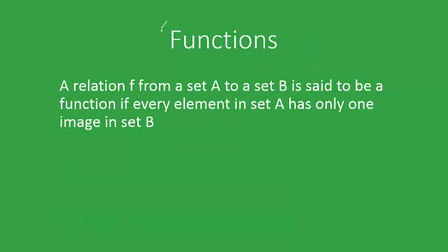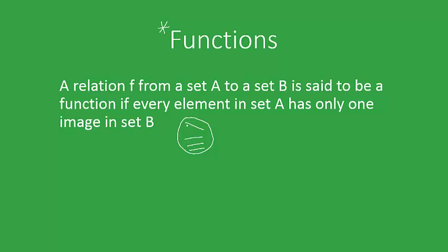Next is the most important concept of this video tutorial: functions. A relation F from a set A to set B is said to be a function if every element of set A has only one image in set B. As shown here, the functional mapping lines should converge or stay parallel — the functional lines never diverge. For example, for the function f(x) = x, it will contain elements like (1, 1), (2, 2), and so on.